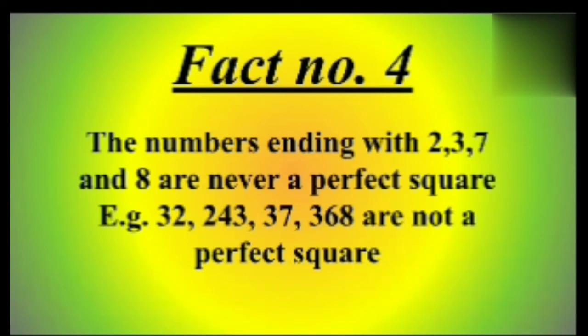Fact number four: The numbers ending with two, three, seven, and eight are never a perfect square. For example, 32, 243, 37, 368 are not a perfect square.